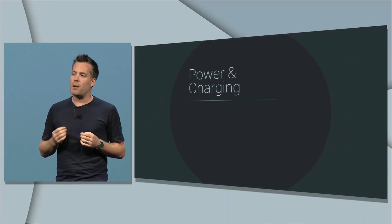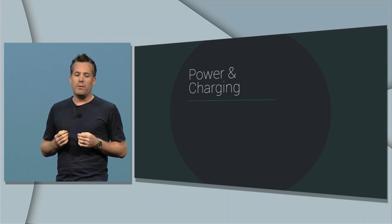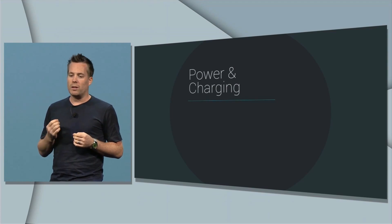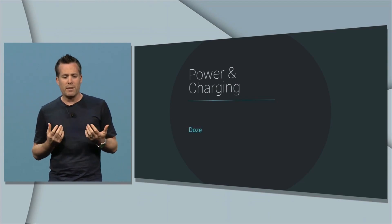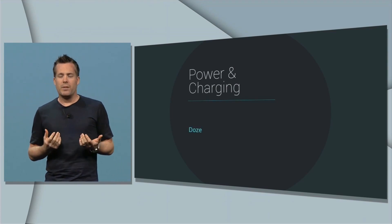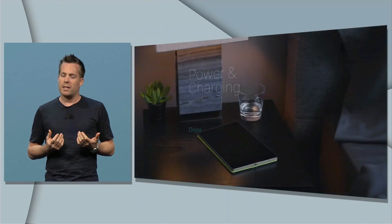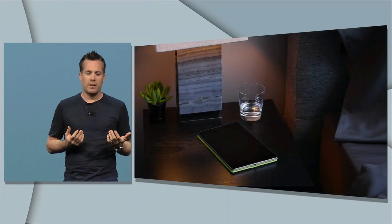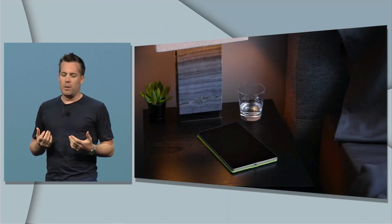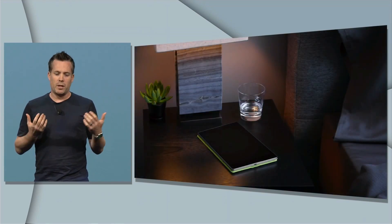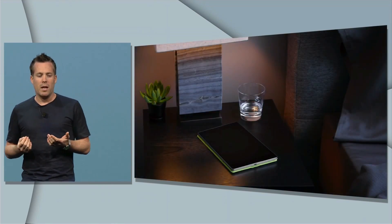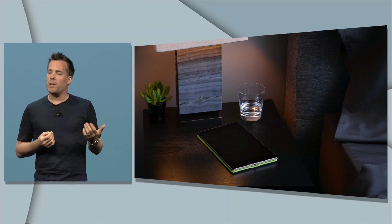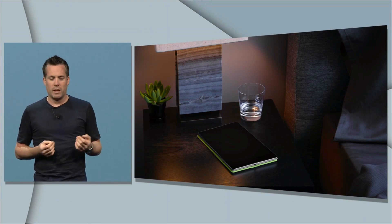Hi everyone. Today we're taking a quick look at some of the features of Android M. First off is Doze mode, which is going to help save you battery life. Google are claiming up to a four times improvement in battery life by using this technique.